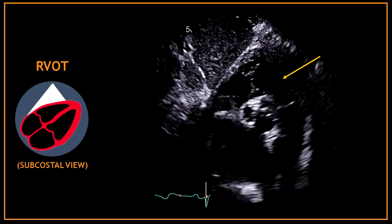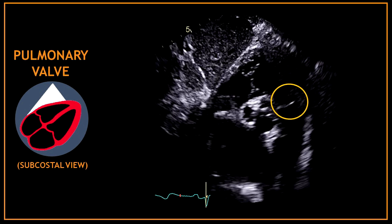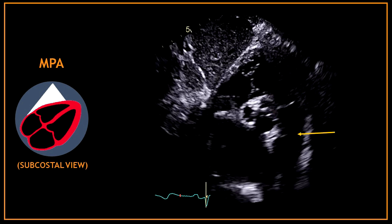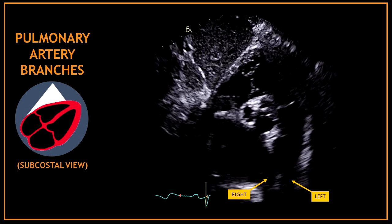Patients with COPD often have poor parasternal views, and the subcostal view gives you a great opportunity to assess all the short axis views, even at the great vessels level. This is a short axis view of the great vessels level obtained from the subcostal view. Here we can find the right ventricular outflow tract, the pulmonary valve, the main pulmonary artery, and often the right and left pulmonary artery branches.